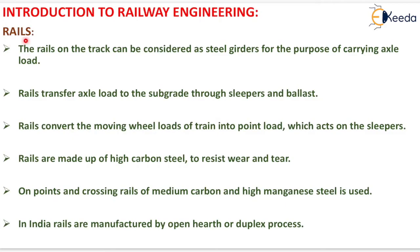What do you mean by rails? The rails on the track can be considered as steel girders for the purpose of carrying axle load. Rails transfer axle load to the subgrade through sleepers and ballast. Rails convert the moving wheel loads of trains into point loads which act on the sleeper. Rails are made up of high carbon steel to resist wear and tear.